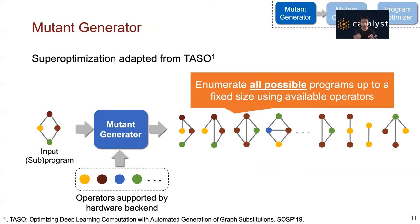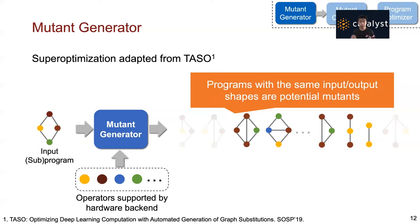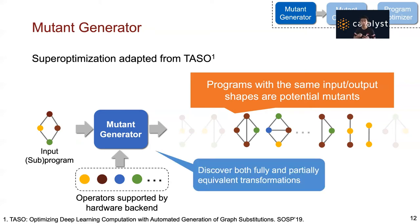To generate potential mutants, the mutant generator uses the super-optimization idea adopted from our earlier work, TASO. It accepts a subprogram of the input and tries to generate potential mutants. It uses the operators supported by the hardware backends as basic building blocks and enumerates all possible programs up to a fixed size using these available operators. All programs with the same input-output shapes as the original subprogram become potential mutants, and each mutant can replace the original subprogram to become a partially equivalent transformation. Our mutant generator discovers both fully and partially equivalent transformations.